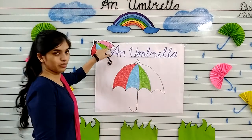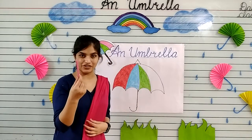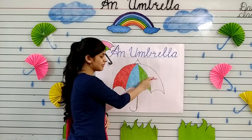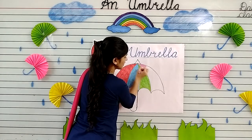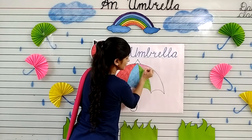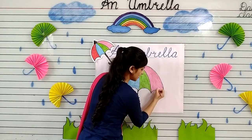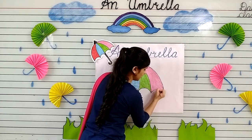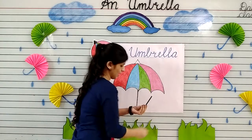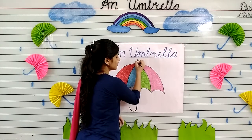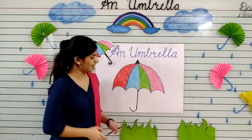Yes, this is pink color. So kids, take your pink crayon and start coloring in the last part of the umbrella. Start at the top again and hold your crayon tightly. I am doing it in one direction only. I have almost done my pink color. Now take your black crayon and color in this part of the umbrella. And our umbrella is ready.